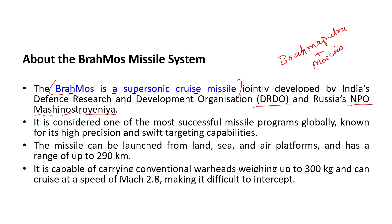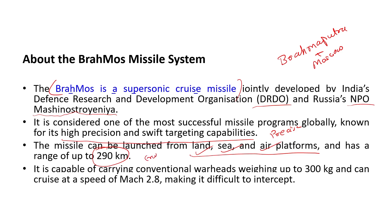What are the capabilities of this missile? First and foremost, it is considered one of the most precise missiles. It has high precision and swift targeting capabilities. It can be launched from all three platforms — land, sea, and air — and has a range of up to 290 kilometers, which is considered good for a cruise missile.